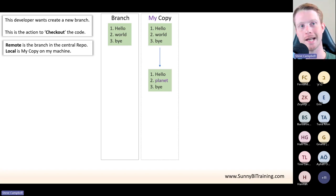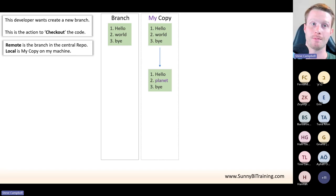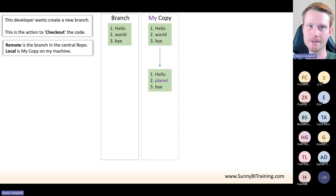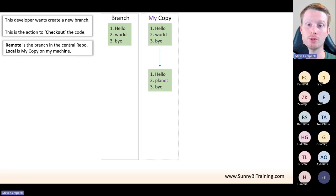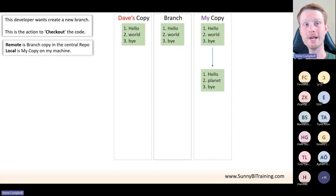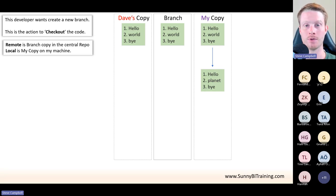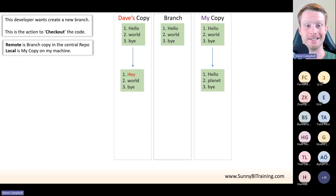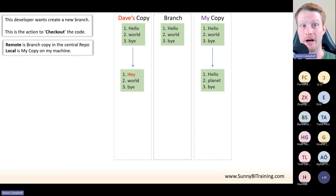However, it's all about being a team and working with other people. Typically it's not just me, and if it was just me I probably wouldn't need Git. Git is to manage your teams, having multiple developers. So we also have Dave, who is in my team and working on this feature. Dave also took a copy and Dave changed line number one.